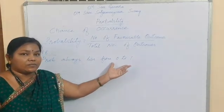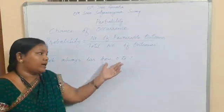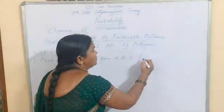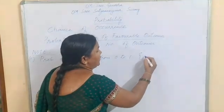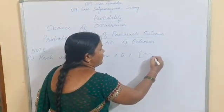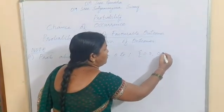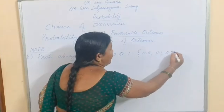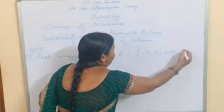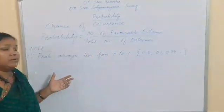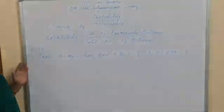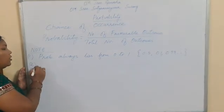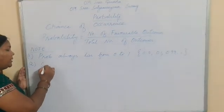Then, what are the values from 0 to 1? The values from 0 to 1 are, for example, 0.5, 0.1, 0.99, and so on.